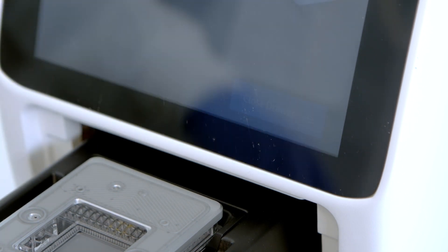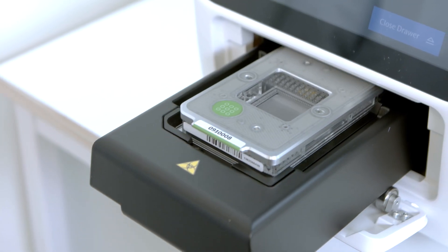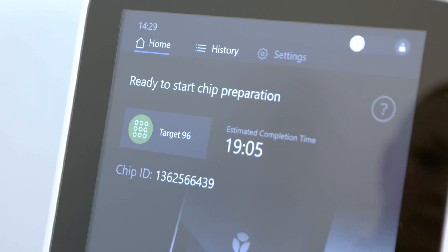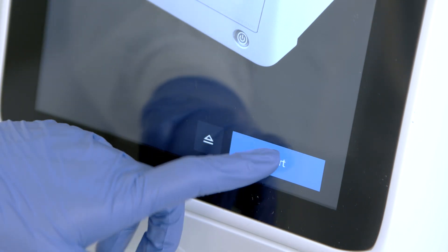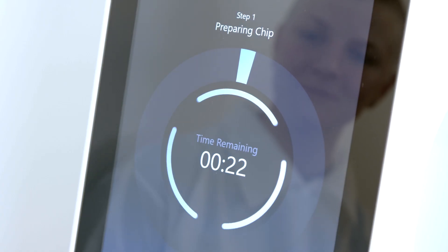Tap close drawer on the screen. The shuttle drawer closes with the ready to start chip preparation screen on display. Click start. Preparation begins and displays the preparing chip screen and the time remaining.